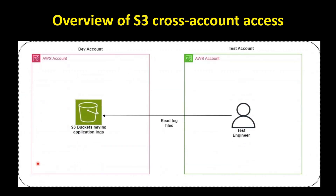First of all, let us understand what S3 Cross Account Access means. In AWS, each account operates independently, but sometimes you need to grant access to resources like S3 buckets across accounts. Cross Account Access allows you to just do that. Suppose we have an AWS account which is our dev account, and in this account we have an S3 bucket having some application logs. And then we have another account which is our test account, and in this test account we have a user which is our test engineer, and he wants to read these log files from the S3 bucket in the dev account. So using cross account access mechanisms, we can enable the user in a different account to access the S3 bucket in the dev account.